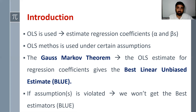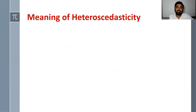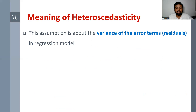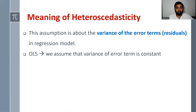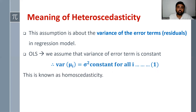If assumptions are violated, we are not going to get the best linear unbiased estimators — the OLS estimators are no longer BLUE if OLS assumptions are violated. One of the assumptions of OLS is homoscedasticity, which is about the variance of error terms or residuals. OLS assumes that the variance of the error term is constant; that is, variance of mu_i is sigma squared, which is constant for all i. This assumption is known as homoscedasticity.